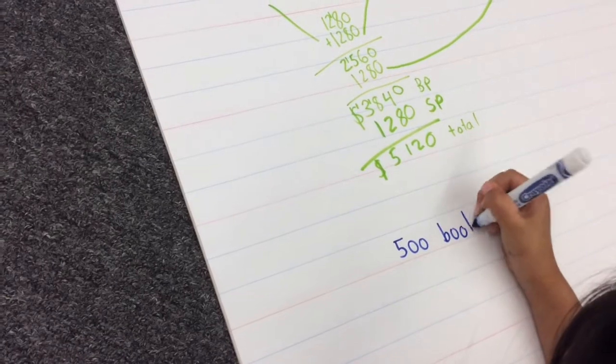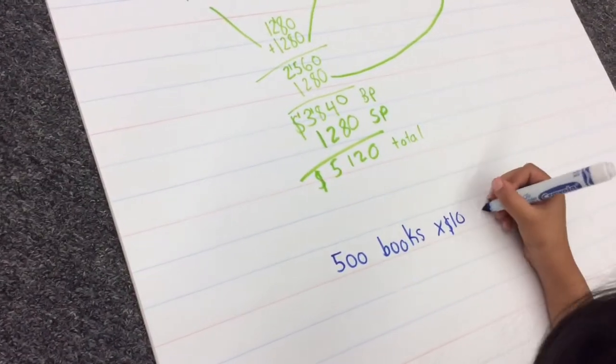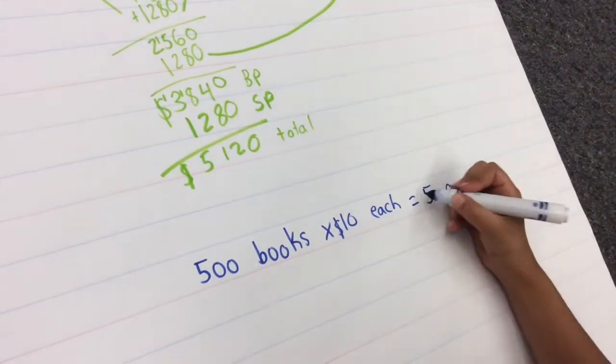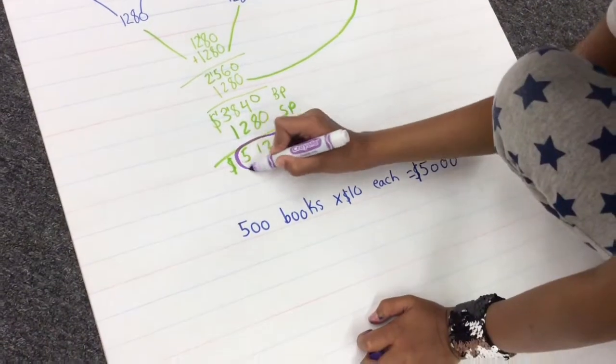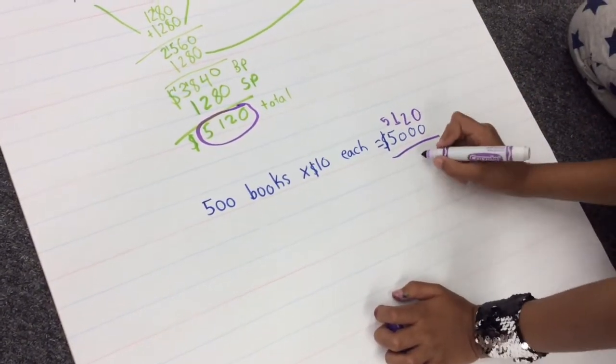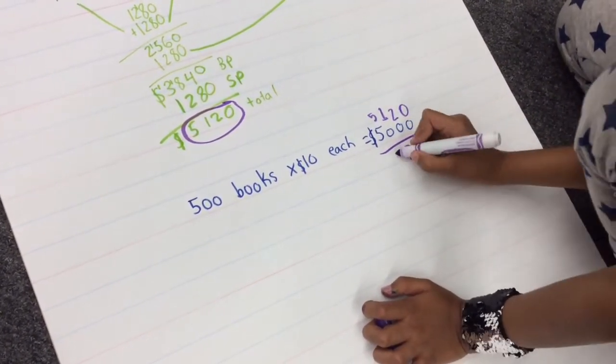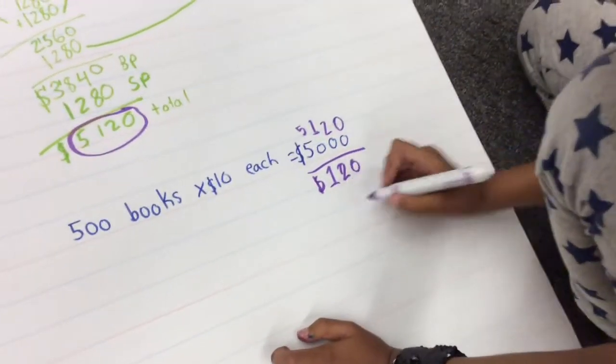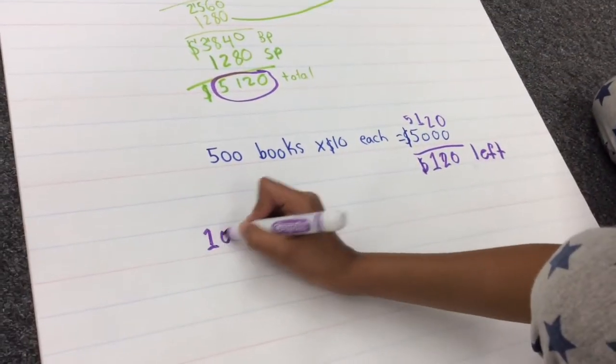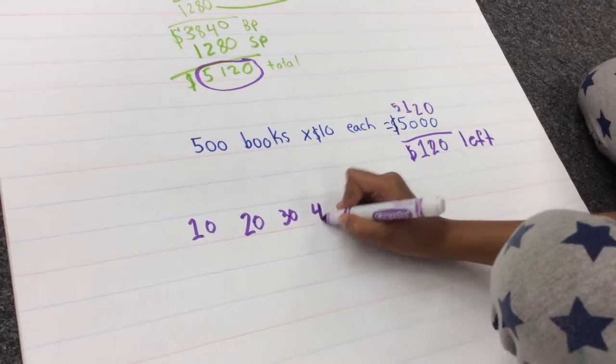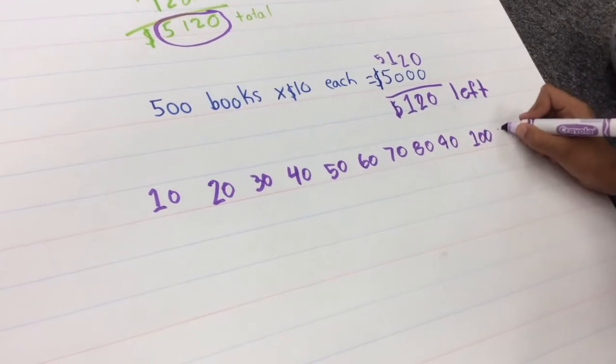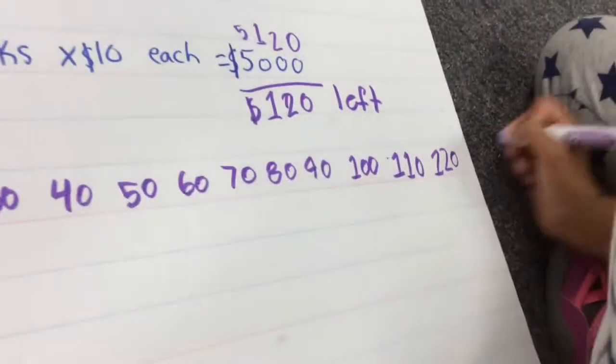The money was used to buy books. Each book cost ten dollars. Zoya knew that five hundred books times ten dollars would be five thousand dollars spent. Minha knew that means there was one hundred and twenty dollars left to buy some more books. She counted by ten dollars until one hundred and twenty. That was enough money to buy twelve more books.